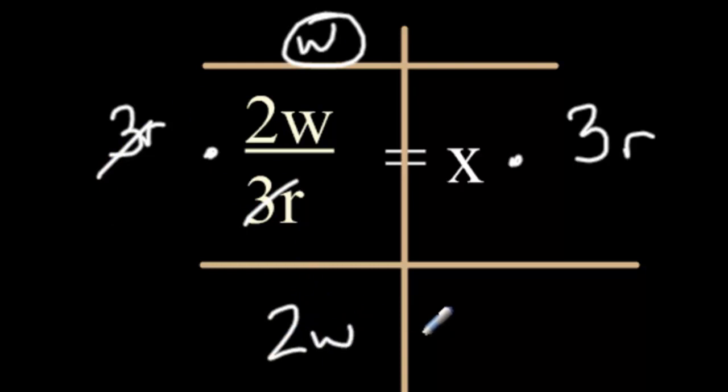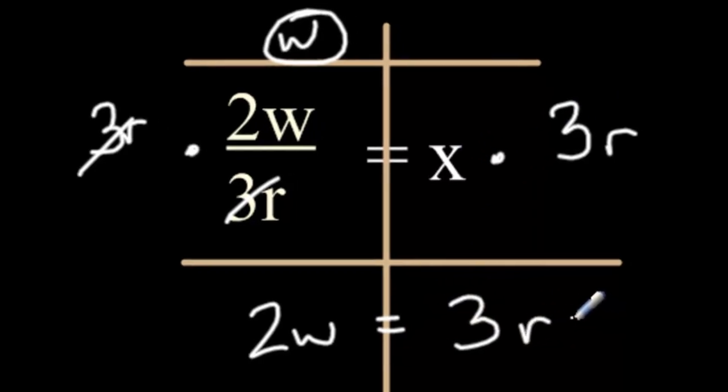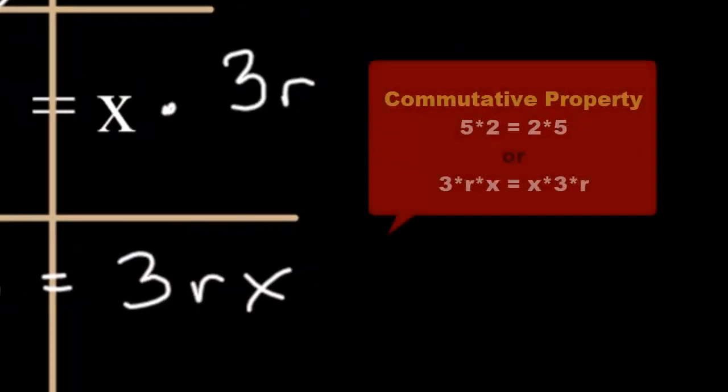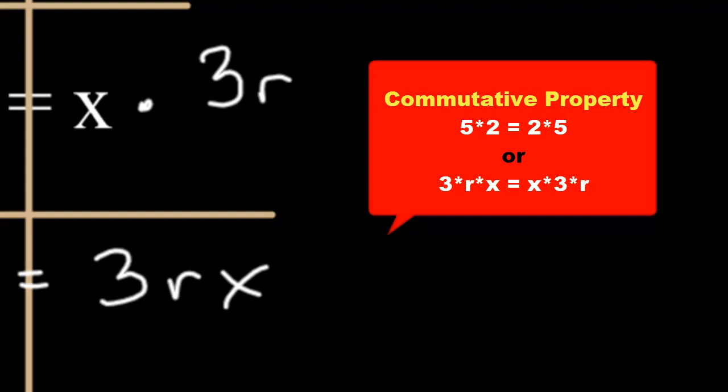Now, I'm left with 2w that drops down. x times 3r is the same as 3rx. Since it's all multiplication, I just put it in alphabetical order.